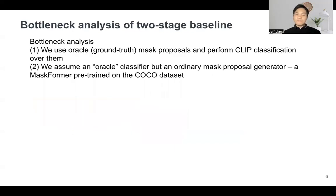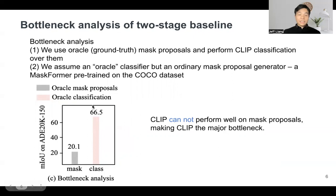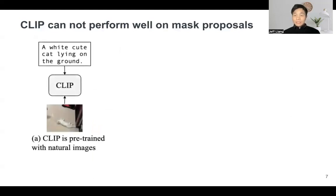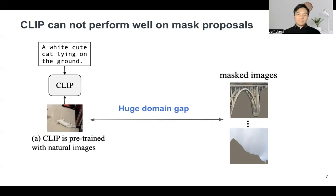Do these assumptions hold? We ran a bottleneck analysis. For the first analysis, we use ground truth mask proposals and perform CLIP classification over them — this gives us 20 mIoU on ADE20K. For the second analysis, we assume an oracle classifier but a standard proposal generator — this gives us 66 mIoU, which is significantly higher. So we can draw the conclusion that CLIP cannot perform well on mask proposals, making CLIP the major bottleneck in the two-stage baseline.